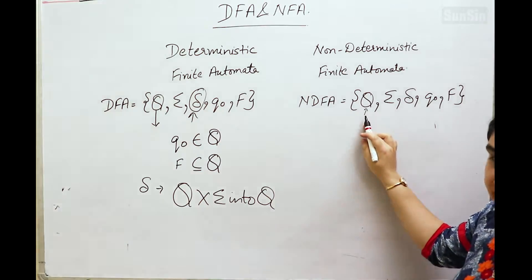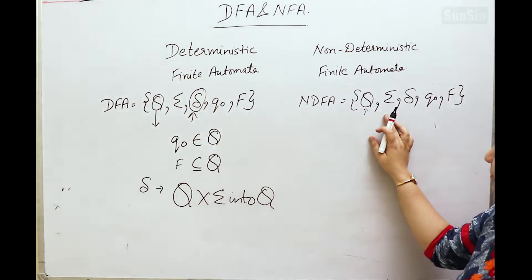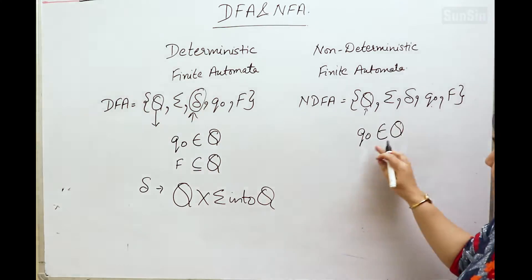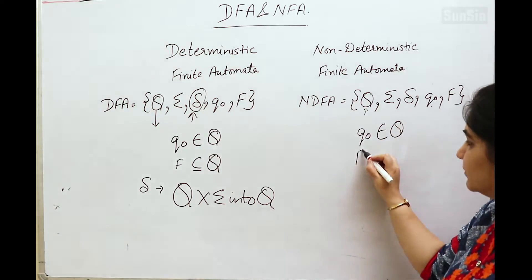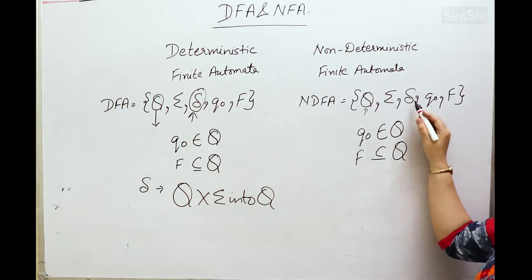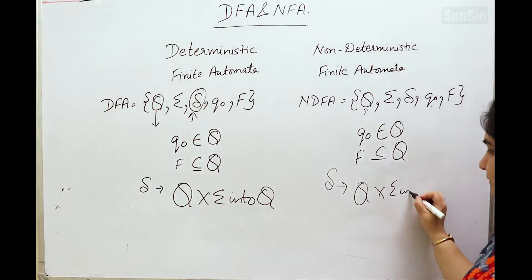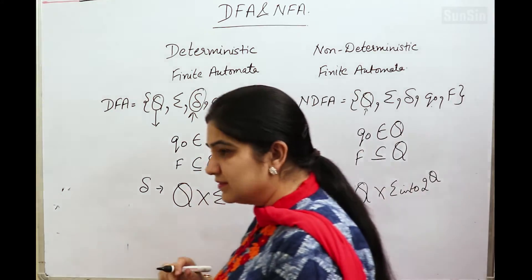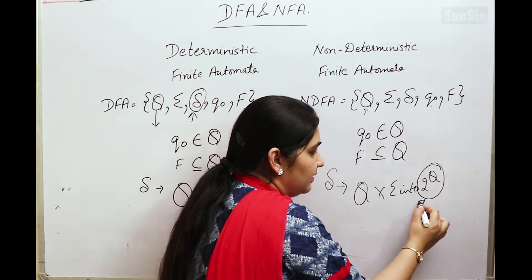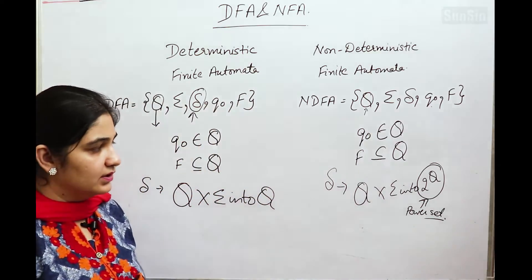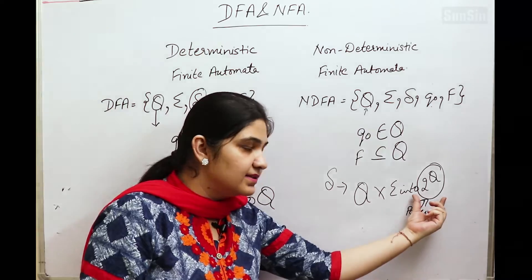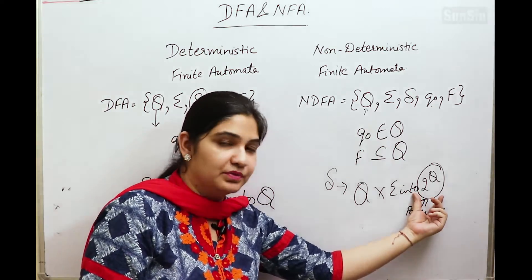For Non-Deterministic Finite Automata, it is also defined by five tuples (Q, Σ, δ, q-naught, F). Q is the finite non-empty set of states, Σ is the finite non-empty set of input alphabets, q-naught is the initial state belonging to Q (only one initial state), and F is the set of final states as a subset of Q (more than one final state allowed). Delta δ is defined as Q × Σ → 2^Q, meaning one present state with one input alphabet can yield more than one next state — the power set of Q represents the upper limit on the number of possible next states.